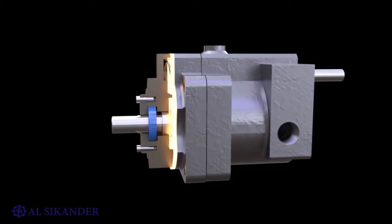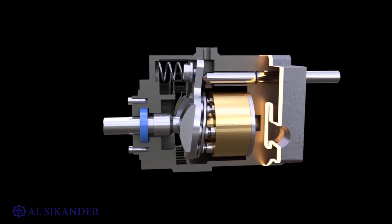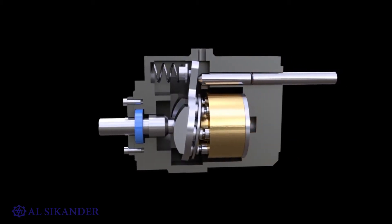In axial piston pumps, the pistons are parallel to the shaft axis of rotation, or slightly inclined, at an angle of no more than 45 degrees.